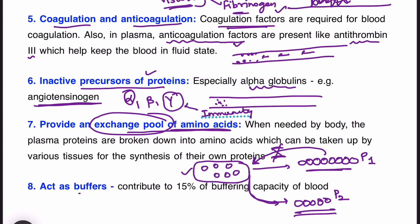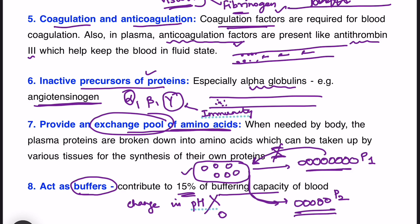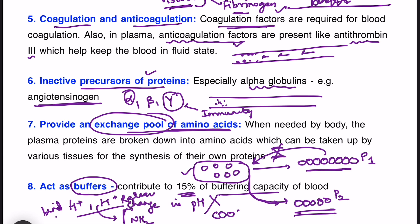Plasma proteins also act as buffers, contributing to 15 percent of the buffering capacity of blood. Buffers help prevent change in pH. Proteins have a COO (carboxyl) group and an NH2 (amino) group. Because of these amino and carboxyl groups, they can either bind to hydrogen ions or release hydrogen ions. So proteins act as buffers because of the presence of these amino and carboxyl groups.